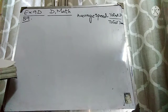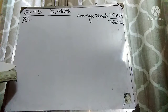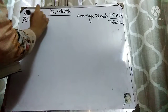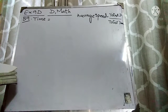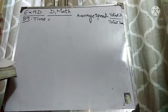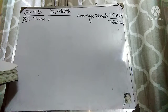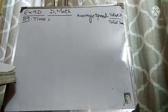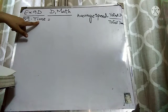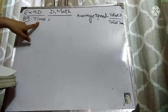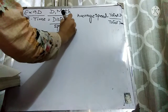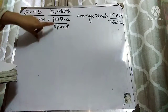A car travels the first 50 kilometers of its journey at an average speed of 25 meters per second. Here the distance is given and the speed is given, but time is not given. So we will find out the time. The formula to find out the time is distance divided by speed. Remember, to find out the time, you have to remember this formula which is distance divided by speed.